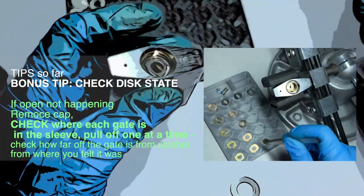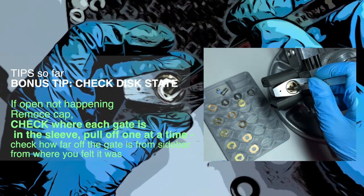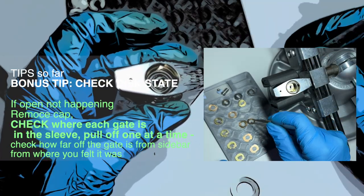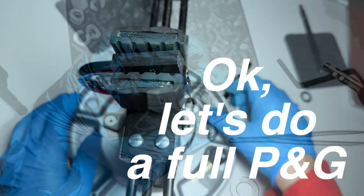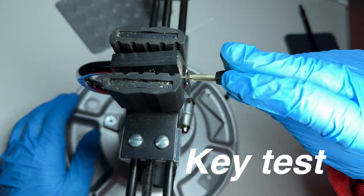Or think about using spacers if you feel like progressive disking will help you get a feel for that lock. And finally, check the disc state. Bonus tip. We've looked at this in the Gerda example, but you can do that here as well. If the open is not happening, you think everything's right, just peel off the discs one at a time to see what their state is and how far or close they are to what you feel. Okay, let's give it a go.